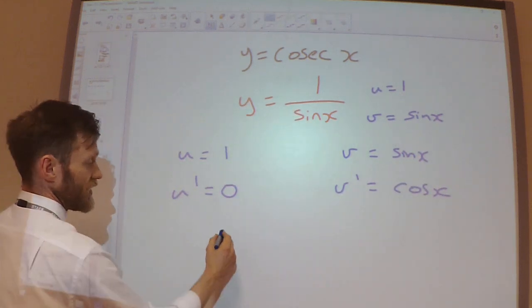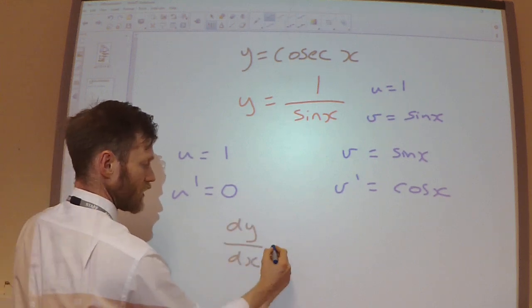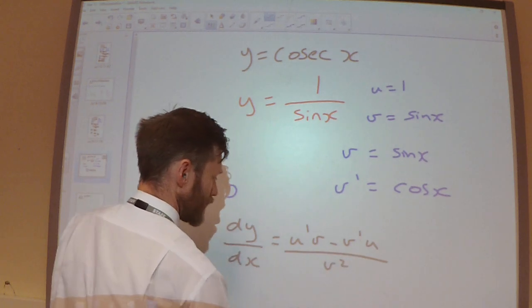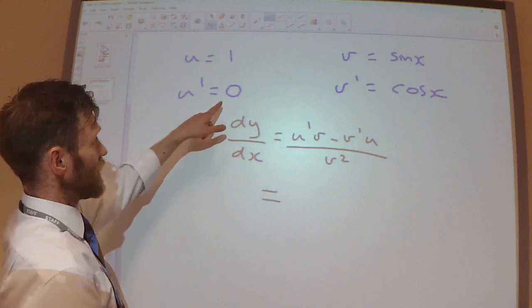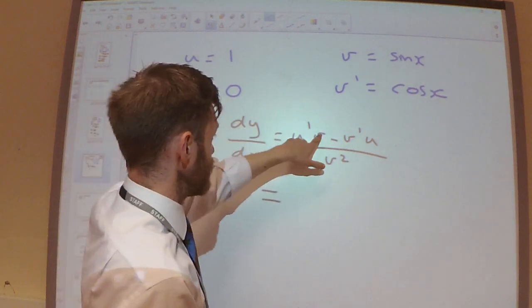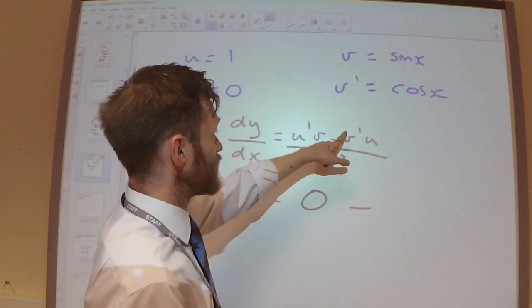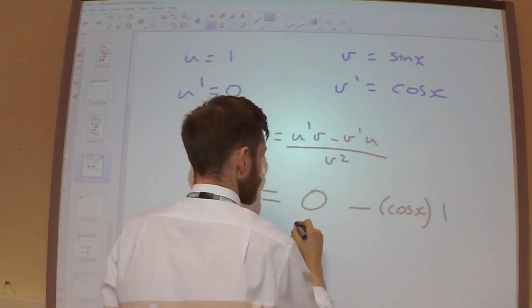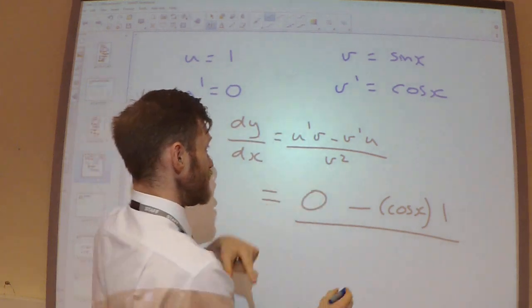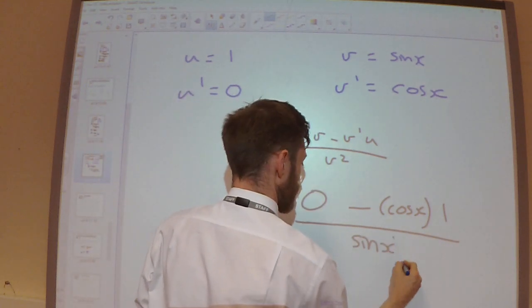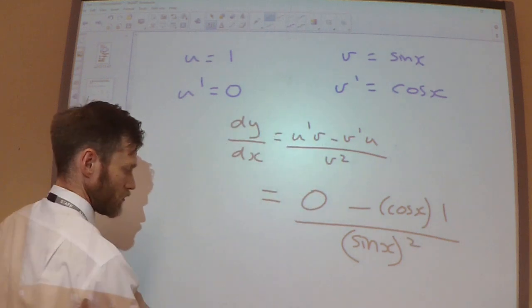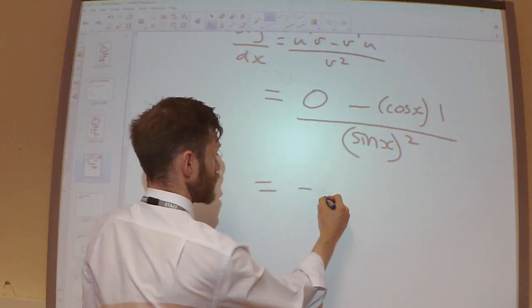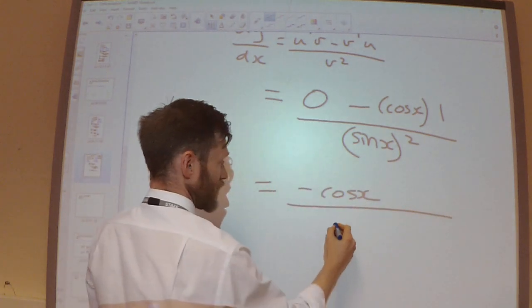So using the quotient rule, u dashed v minus v dashed u over v squared. So 0 times anything is going to be 0, minus cos x times 1, so 1 over v squared. So on the top we've got minus cos, on the bottom we've got sine squared.